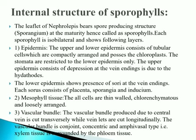First layer is the epidermis: upper and lower epidermis consist of tubular cells, compactly arranged, possessing chloroplasts. Stomata are restricted to the lower epidermis only. The upper epidermis shows depressions at vein endings due to hydathodes. The lower epidermis shows the presence of sori at vein endings; each sorus consists of placenta, sporangia, and indusium.